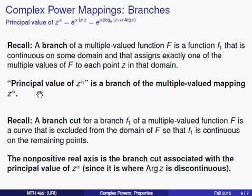Remember, we're taking one particular output of z to the alpha, and it is a continuous function in most of the complex plane. Now, let's talk about where it's not.